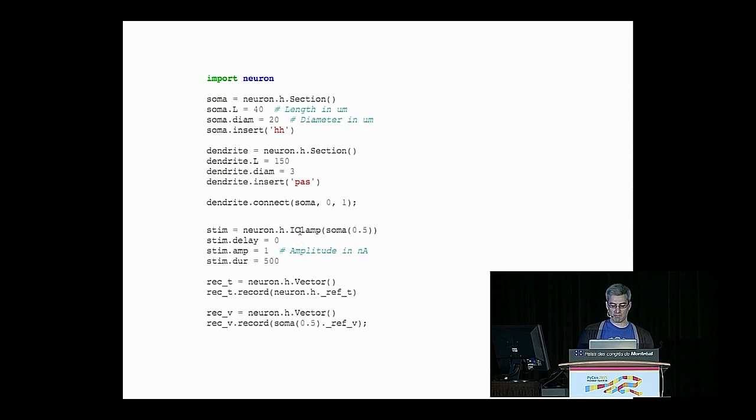And then to simulate our current clamp experiment, we make this iClamp object. We give it the thing that we're clamping the current of. We're going to inject in this case one nanoamp of current for 500 milliseconds. And then what neuron calls vectors are how we're essentially collecting the data from that experiment.